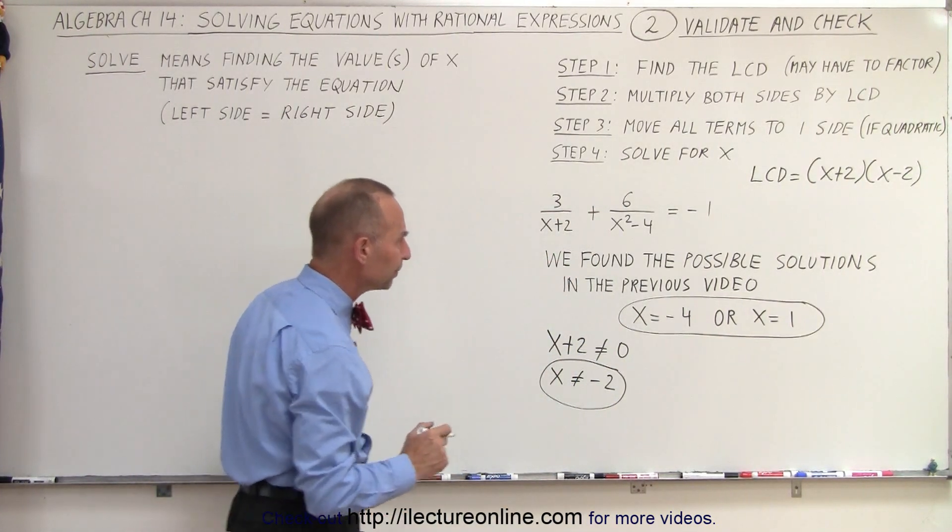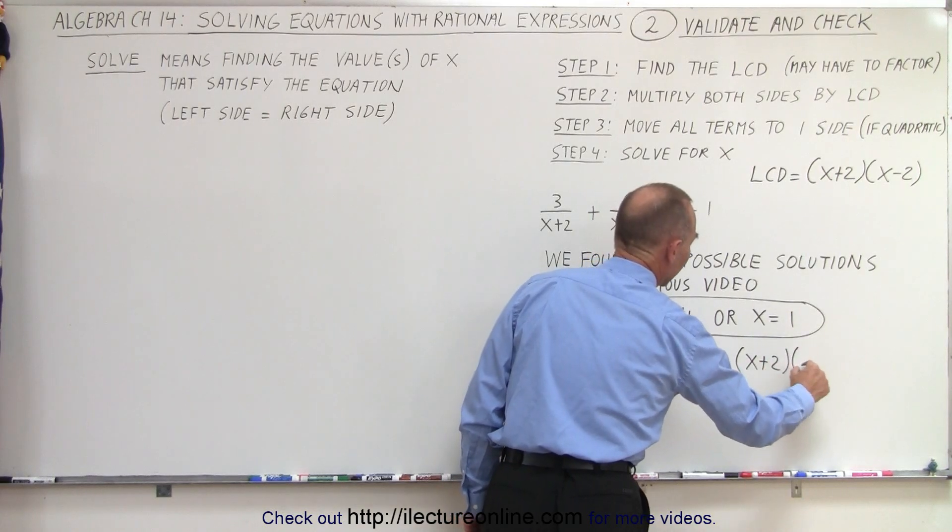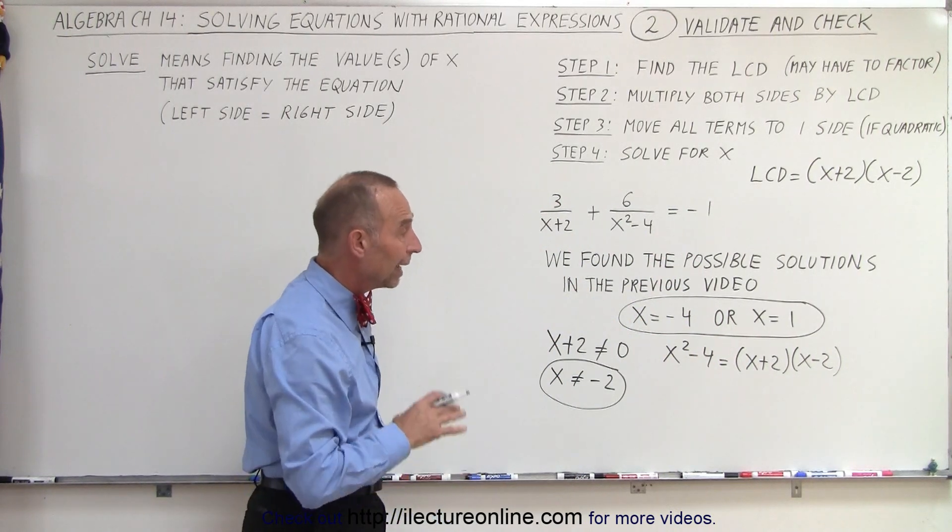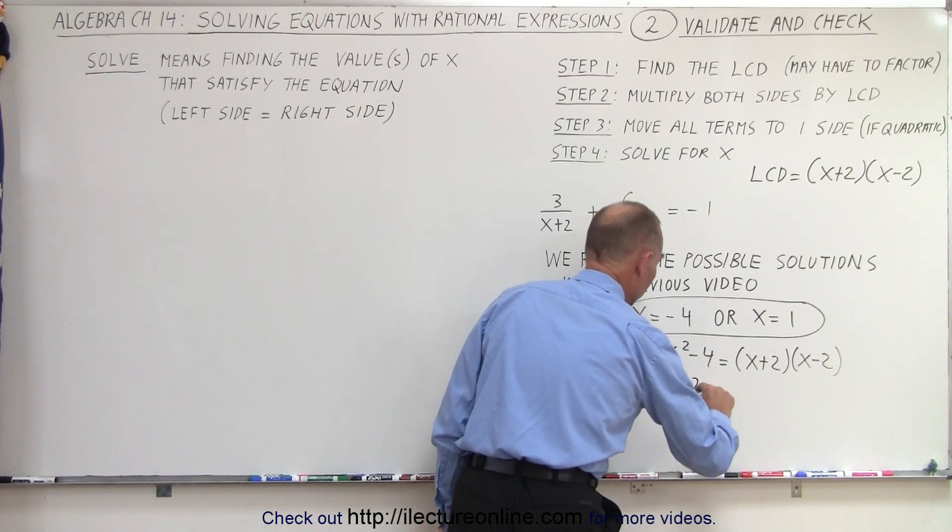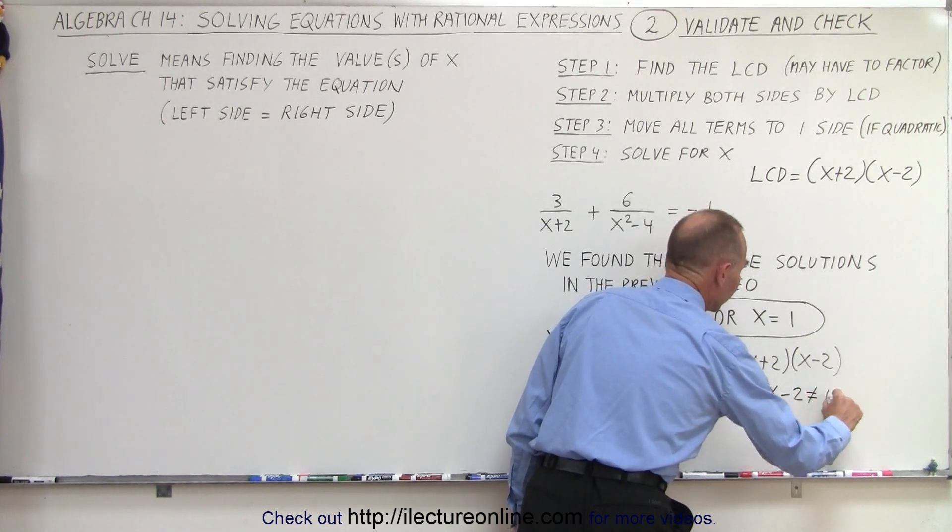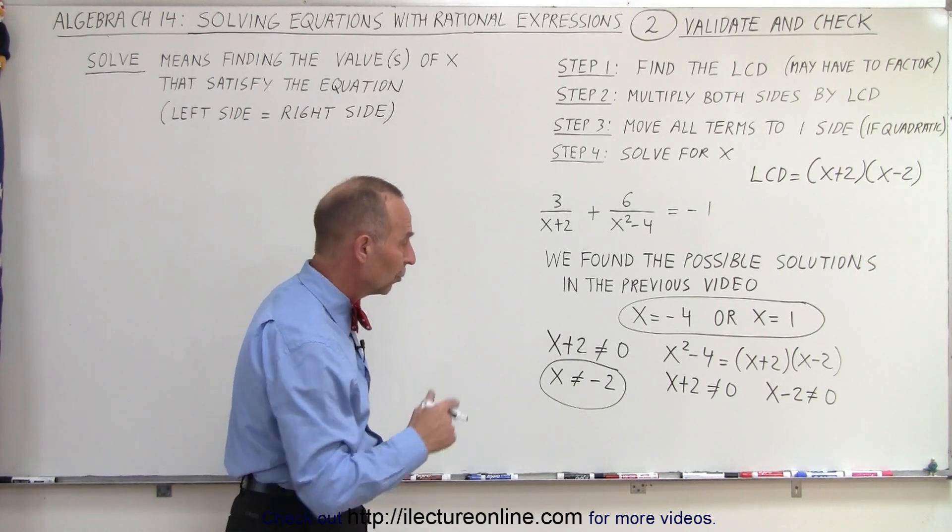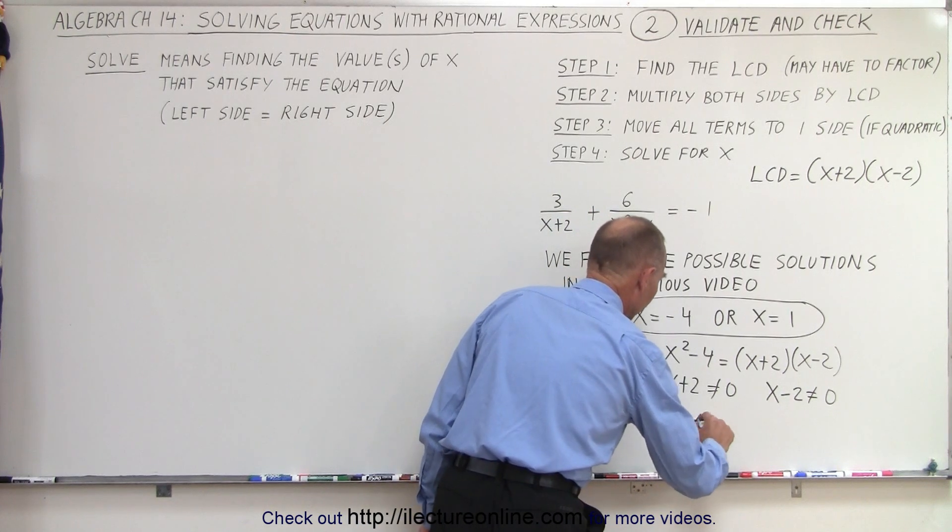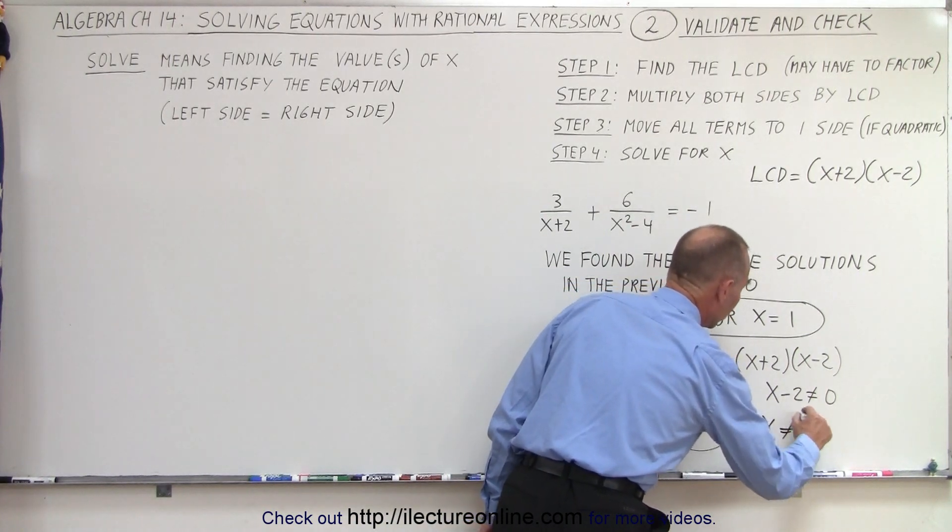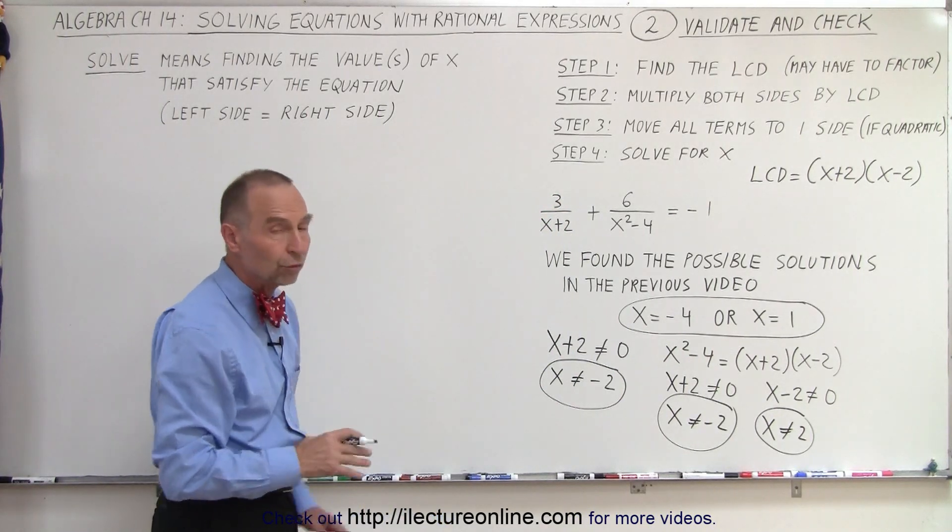How about the next one? x squared minus 4 is equal to the product of x plus 2 times x minus 2, which means x cannot equal negative 2 and x cannot equal 2. In other words, x plus 2 should not equal zero, and x minus 2 should not equal zero. If either one is true, then we have a zero denominator and an invalid expression. So x should not equal negative 2, which is the same condition we found before, but also x should not equal 2. None of our solutions was those two values, negative 2 or 2, so we don't have a problem. It doesn't violate the rule that we cannot have a zero denominator.